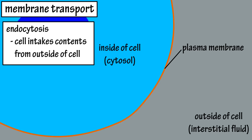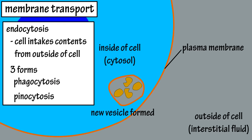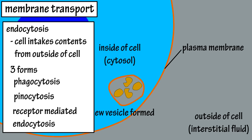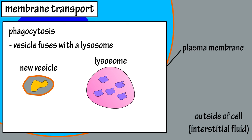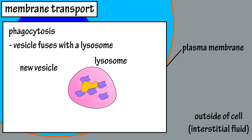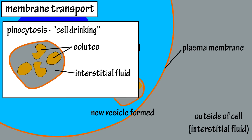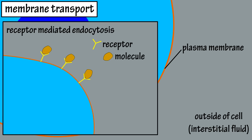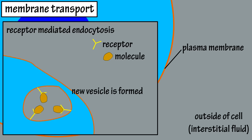In endocytosis, the plasma membrane traps a substance by folding inward, and the lipid bilayer fuses to form a vesicle surrounding the substance. There are three main forms of endocytosis: phagocytosis, pinocytosis, and receptor-mediated endocytosis. In phagocytosis — also called cell eating — a large particle is engulfed by the newly formed vesicle, which fuses with a lysosome containing digestive enzymes that break down the particle. Pinocytosis, or cell drinking, is when the plasma membrane folds inward and engulfs droplets of interstitial fluid containing dissolved solutes. Receptor-mediated endocytosis uses receptors on the outside of the plasma membrane that bind molecules in the interstitial fluid; the membrane then folds to enclose the receptors and bound molecules, forming a vesicle for transport within the cell.